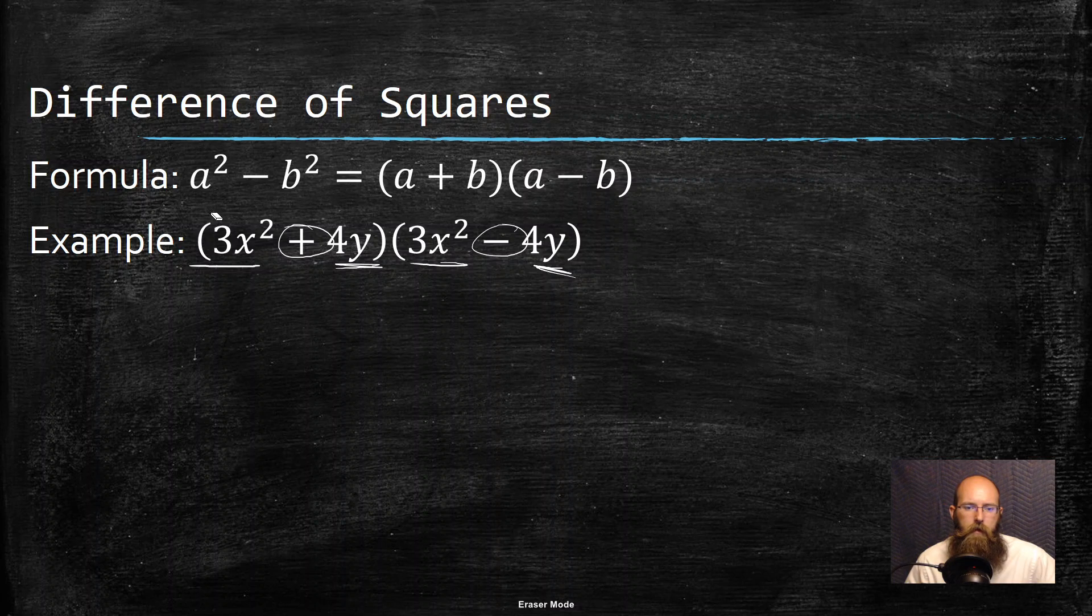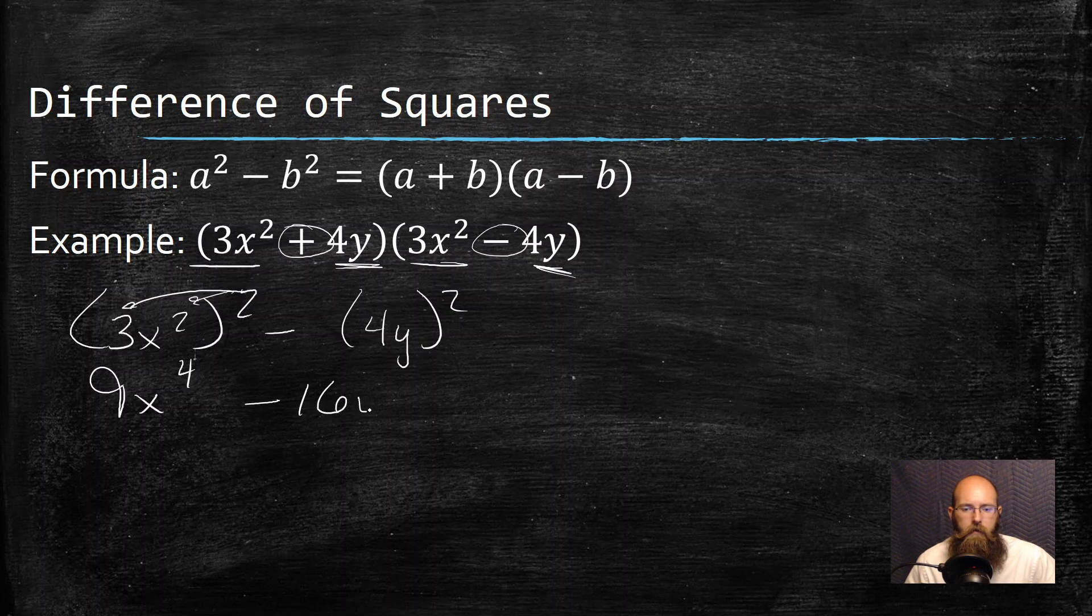So I'm going to take my thing in front, 3x². And I need to square that. I'm going to subtract the thing in back and square it. And I distribute that square to both of these things. So 3² is 9, x² raised to the second power, so that's power of power, is going to multiply 2 times 2 and gets me 4. Minus 4² is 16, y² is y², done.